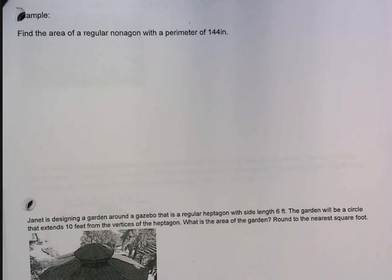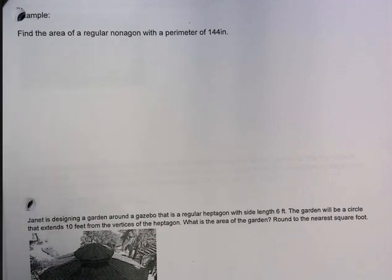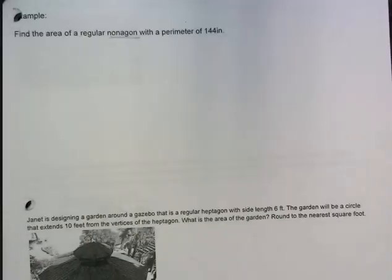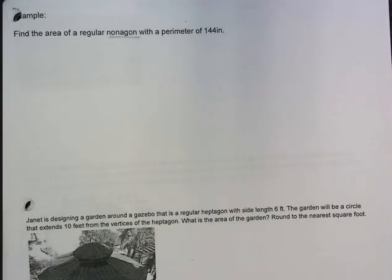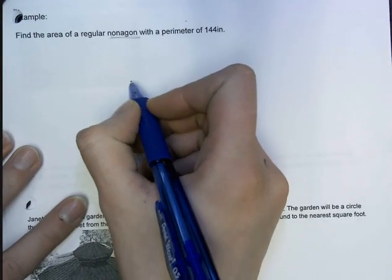This video is going to do a couple more examples from 9.2 just to give you guys a better feel for working with area of regular polygons. These two examples, this first one I don't have a picture to work with. I do need to know how many sides a nonagon has. So a nonagon has nine sides and I can just tell you trying to draw a regular nonagon so that they all look the same isn't the easiest task, especially for me.